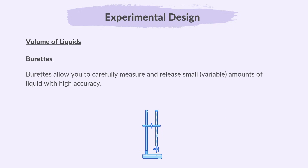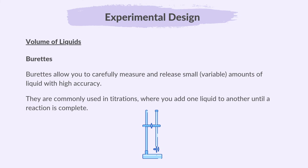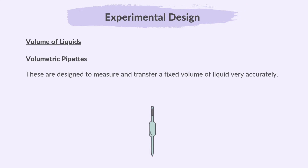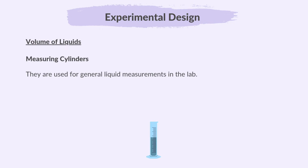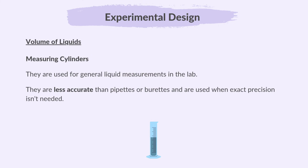Burettes allow you to carefully measure and release small or variable amounts of liquid with high accuracy. They are commonly used in titrations where you add one liquid to another until a reaction is complete. Volumetric pipettes are designed to measure and transfer a fixed volume of liquid very accurately. They are ideal when you need to ensure precise amounts, such as in experiments requiring exact measurements. Measuring cylinders are used for general liquid measurements in the lab — they are less accurate than pipettes or burettes and are used when only an approximate amount is needed.